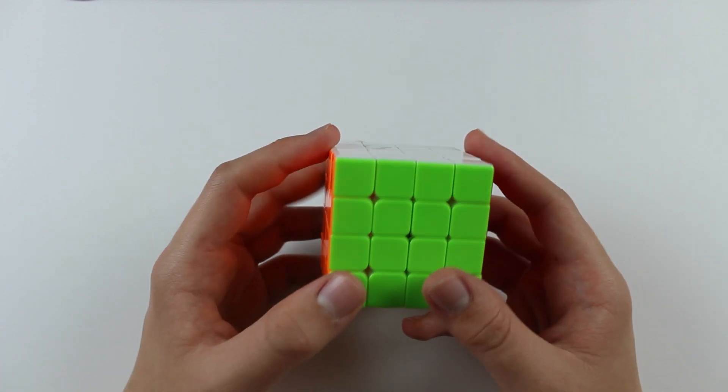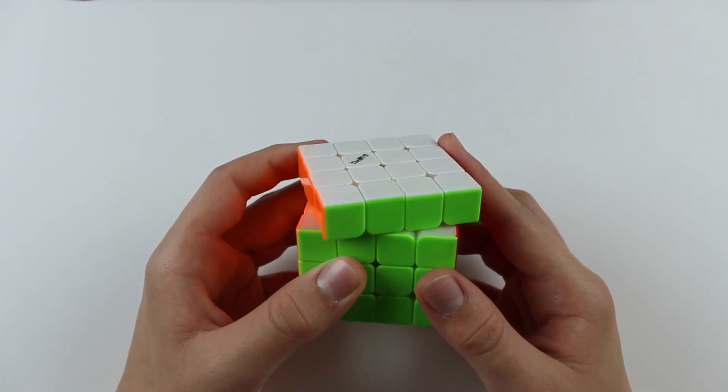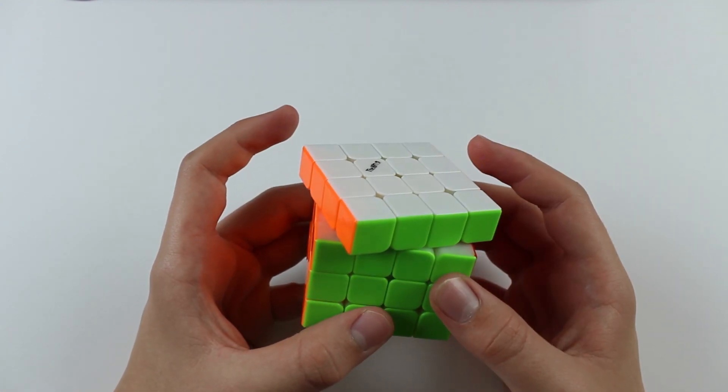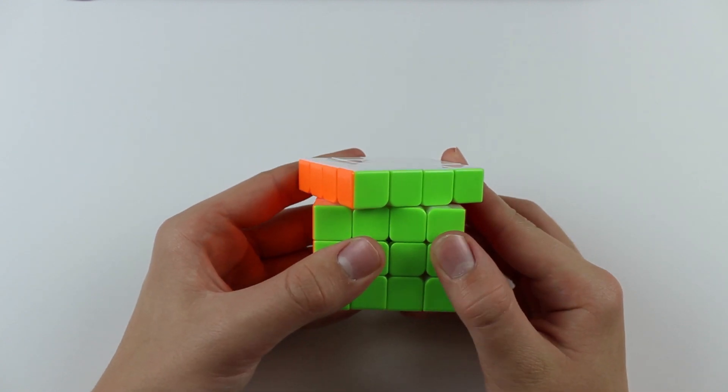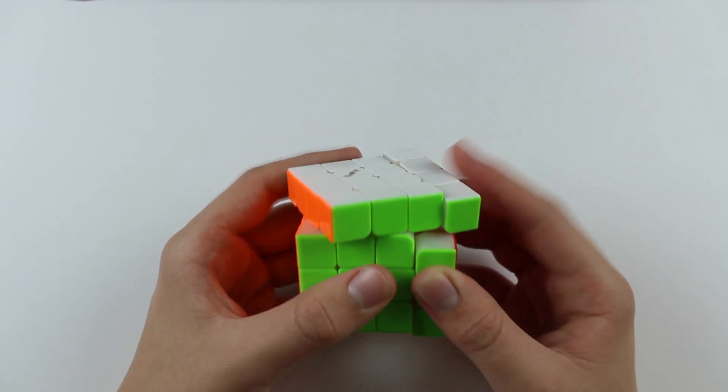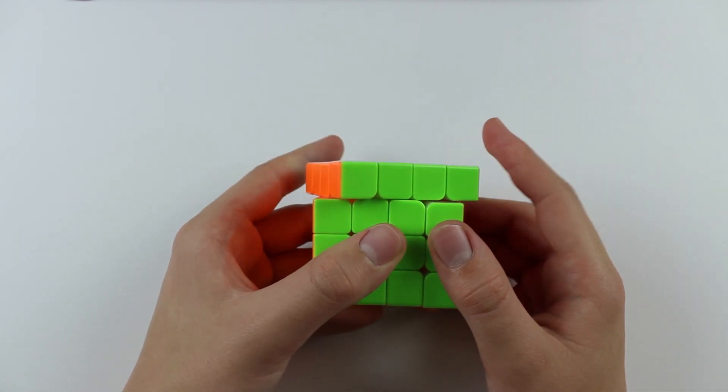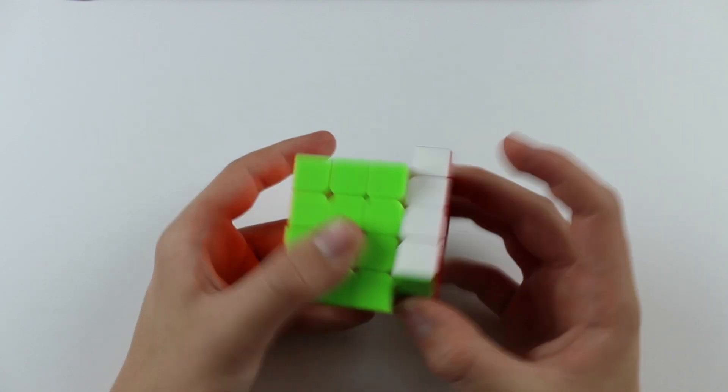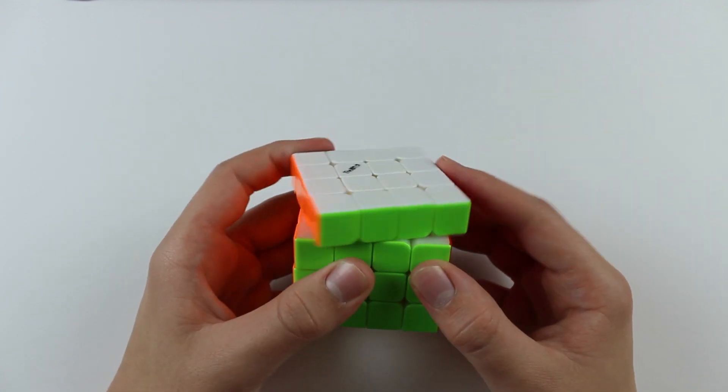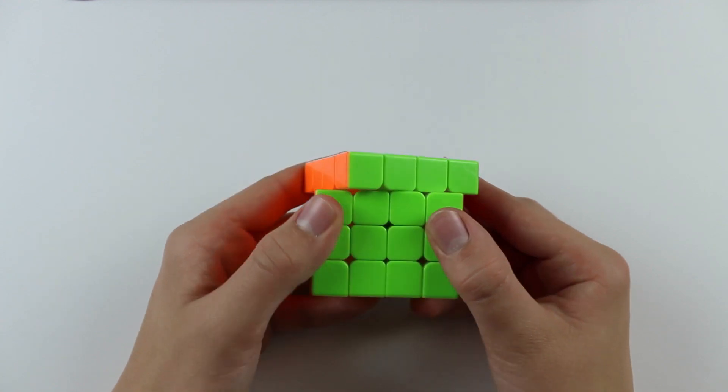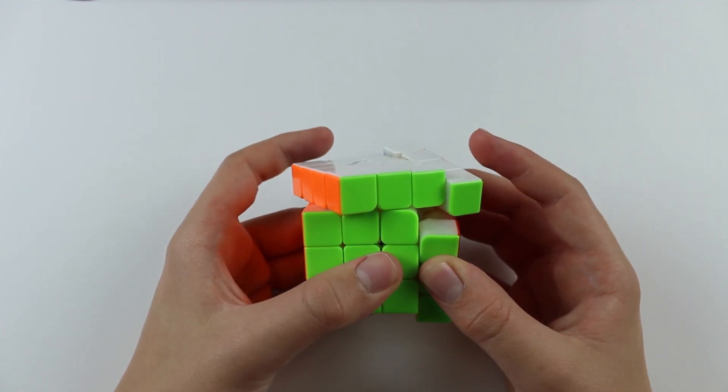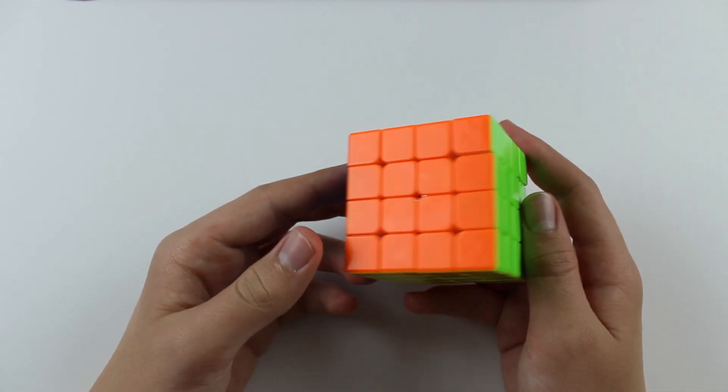Both of these 4x4s turn pretty well. However, the corner cutting is definitely not a strength of either 4x4. It can barely do one piece of corner cutting, it just locks up. And then even a bit under a piece, it takes a bit of force to really corner cut. But once you get to a piece, then the corner cutting just stops, and it won't go any further.